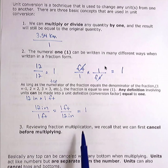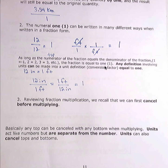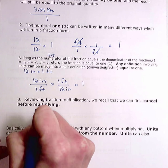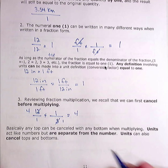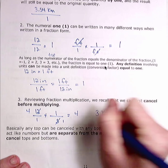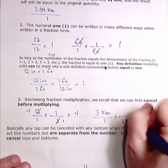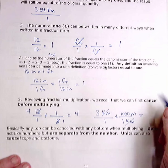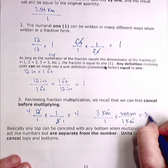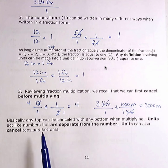When carrying out conversions, cancel before multiplying. So if you have 3 kilometers divided by 1 kilometer over 1,000 meters, you can cancel out the kilometers to get 3,000 meters. Basically, any top or numerator can be canceled with any bottom when multiplying. Units act like numbers but are separate from the numbers. Units can also cancel tops and bottoms.